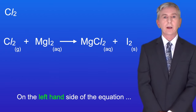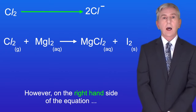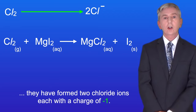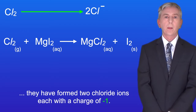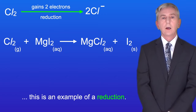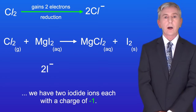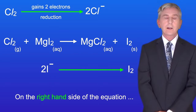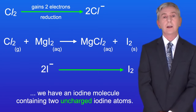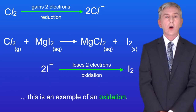On the left hand side of the equation, we have a chlorine molecule containing two uncharged chlorine atoms. However, on the right hand side of the equation, they have formed two chloride ions each with a charge of minus one. Because the two chlorine atoms have gained one electron each, this is an example of a reduction. On the left hand side of the equation we have two iodide ions each with a charge of minus one, and on the right hand side we have an iodine molecule containing two uncharged iodine atoms. Because the two iodide ions have lost one electron each, this is an example of an oxidation.